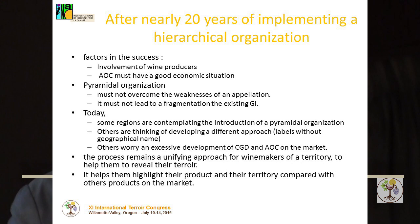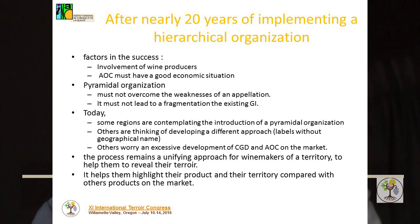The other CGDs of Côte-de-Provence are still in a construction phase. In 2016, the winemaker organization of AOC Côte-de-Provence examined whether to continue this process or take a break. After nearly 20 years of implementing a hierarchical organization, results vary. The involvement of wine producers is a very important factor in success. Recognition of a new denomination within an existing AOC can only be considered in a good economic situation. The pyramidal organization must not overcome the weaknesses of an appellation, and should not lead to fragmentation that would weaken the existing geographical indication.